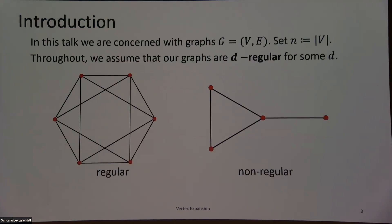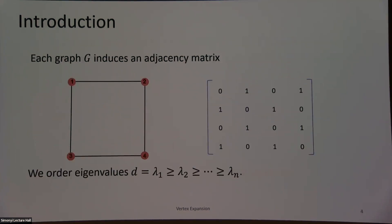Just a couple of slides about definitions, because not every talk is about spectral graph theory. We're going to be talking about graphs. We'll always know N as the number of vertices, and we're going to assume our graphs are D-regular, which just means every vertex has exactly D neighbors. Every graph induces an adjacency matrix where rows and columns correspond to vertices — a one if there's an edge, zero if there's not. This is a linear operator describing the walk on the graph. It's symmetric, so it has real eigenvalues, and the top eigenvalue is D, corresponding to the all-ones vector.